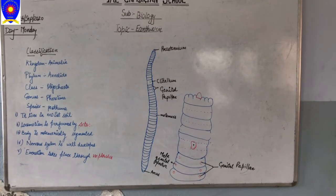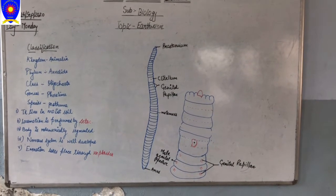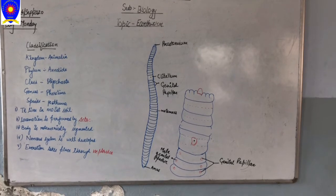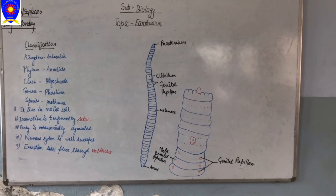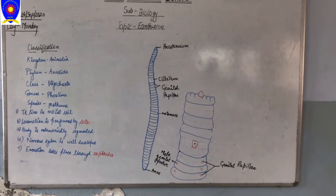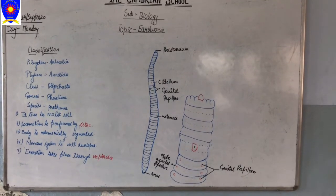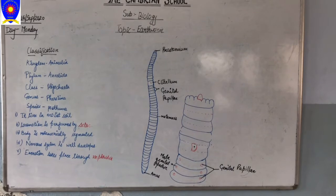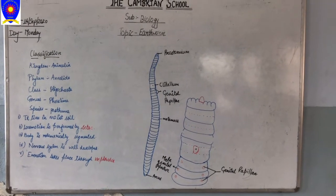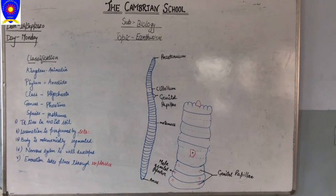Hello students, today I welcome you all once again in the Cambrian School. Today I will tell you about one more specimen, that is the earthworm. In the last slide I told you about the Ascaris, and I told you that the earthworm is basically known as Pheretima posthuma.